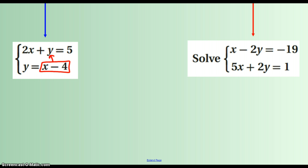And so here's what this will turn into: 2x, and it would normally be plus y, but we're saying this is y, plus x minus 4 equals 5. Okay, and now we have an equation that we can solve. 2x plus 1x is 3x, and I have minus 4 here equals 5.